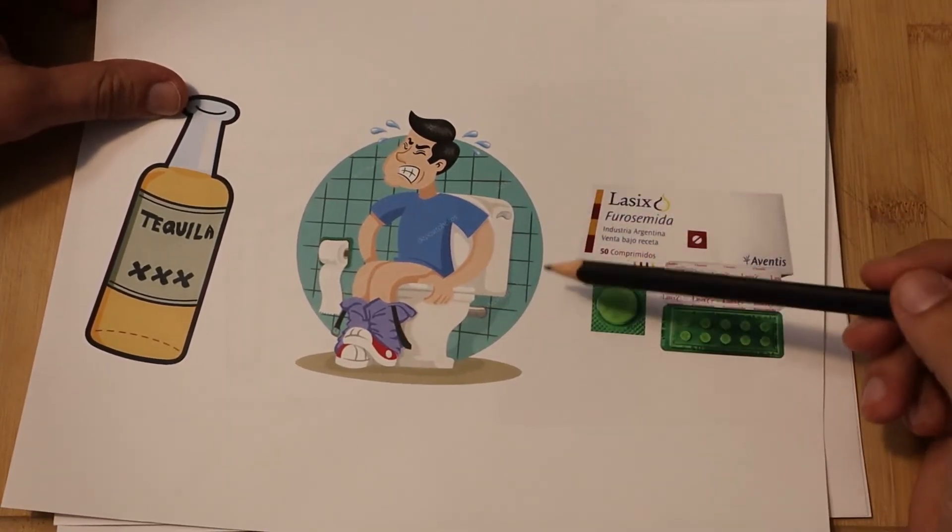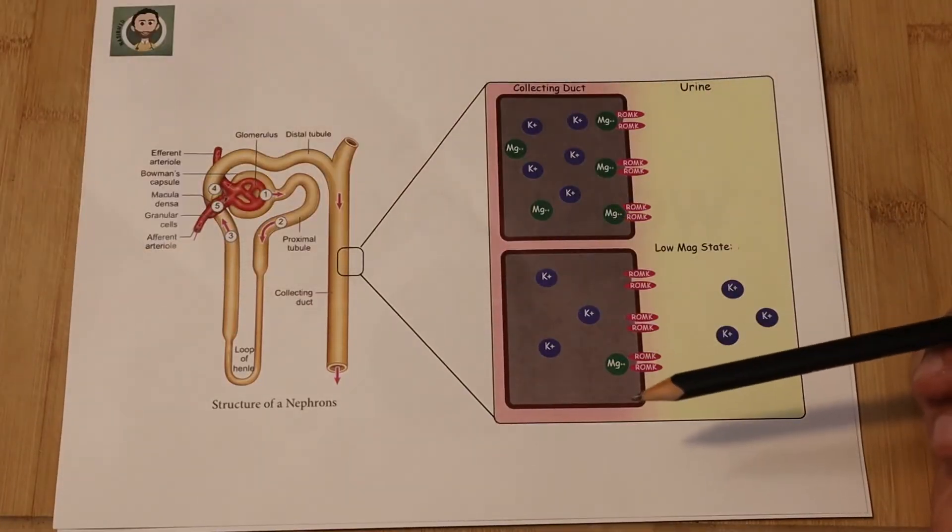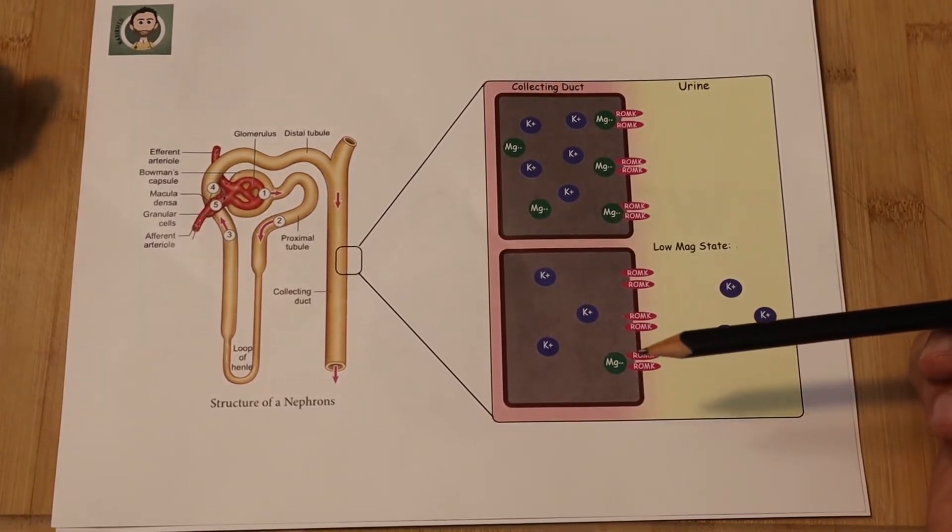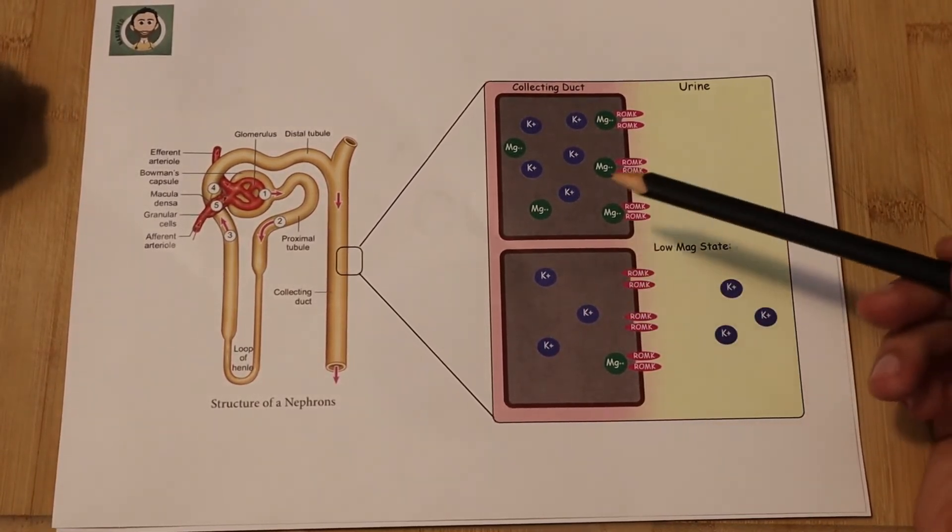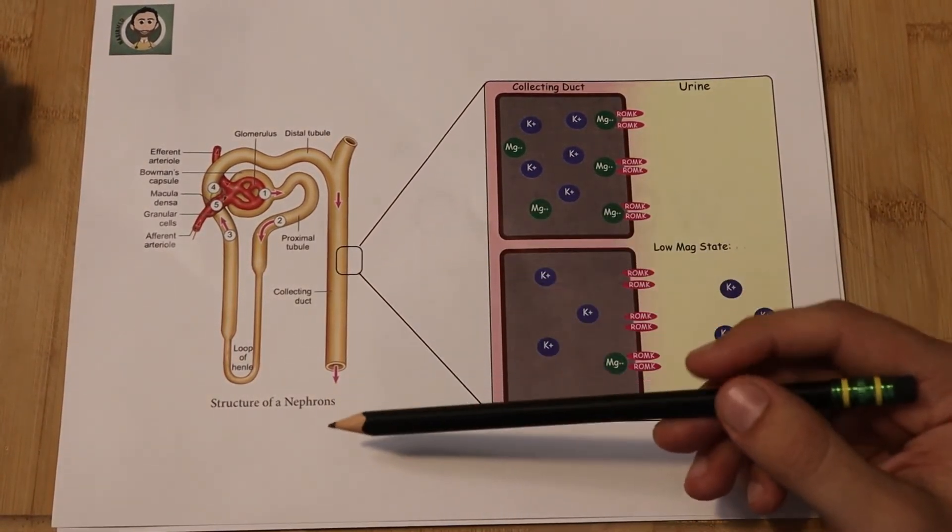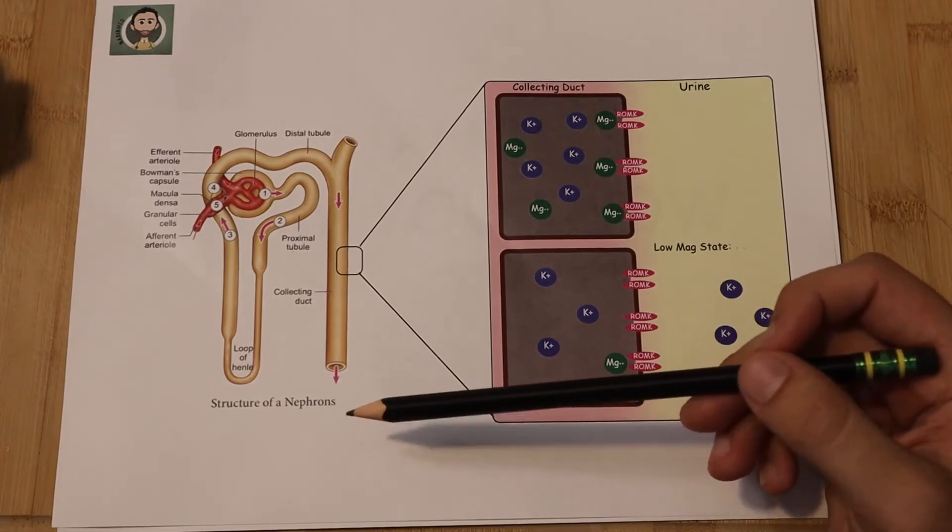But even in the absence of those conditions, there is still a mechanism that explains why hypomagnesemia can lead to hypokalemia. Let me take you a step or two back to your MED1 where you learned about the structure of a nephron.